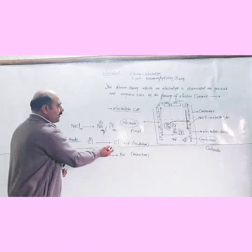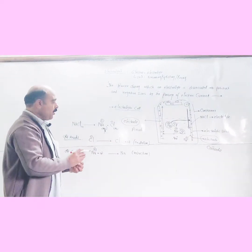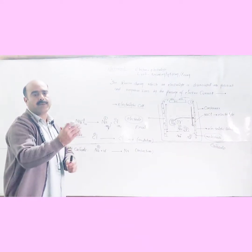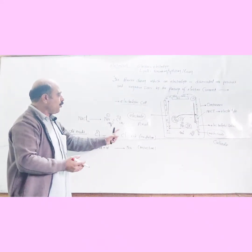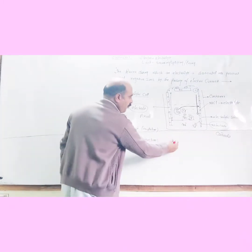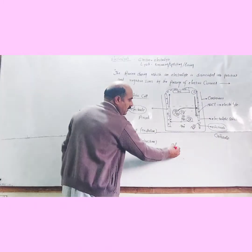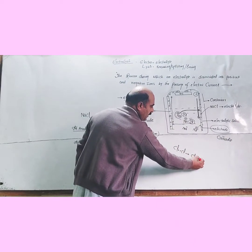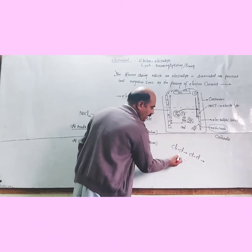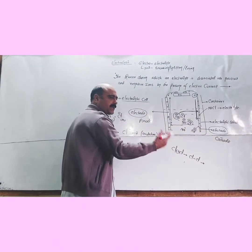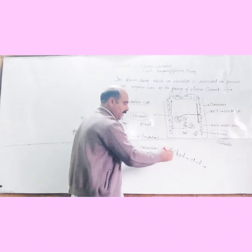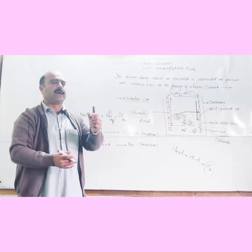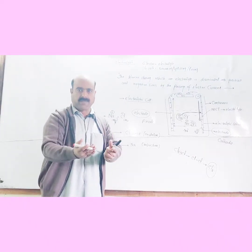Chlorine atoms cannot exist in atomic form alone. Chlorine exists in molecular form as Cl₂. Two chlorine atoms share electrons to form a single covalent bond. So chlorine atoms convert to chlorine molecules (Cl₂) because a single chlorine atom is unstable and exists in pairs.